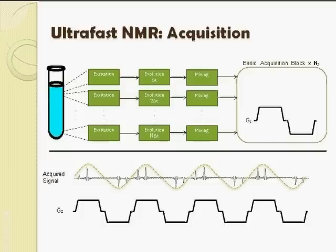First, encode along the z-axis your T1 evolution, and then acquire and observe your T2 evolution by direct measurement.